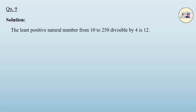Question 9. In the natural numbers from 10 to 250, how many are divisible by 4? Solution. The least positive natural number from 10 to 250 divisible by 4 is 12.